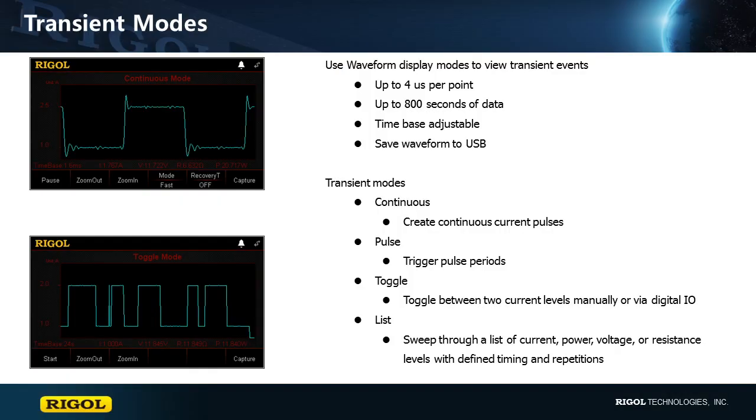Now let's look at the transient modes available in the DL3000 electronic load. There are three different modes for pulsing the current load on your device.